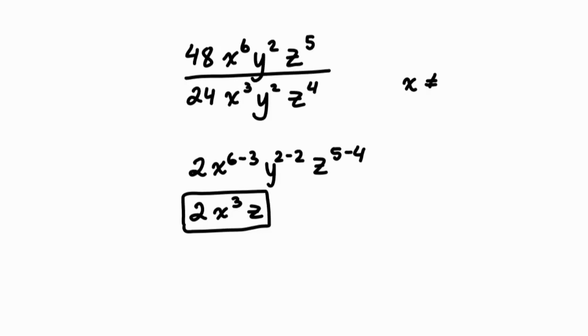then x cannot equal 0, y cannot equal 0, and z cannot equal 0. Because if I multiply 24 y z by 0, I'll get 0.